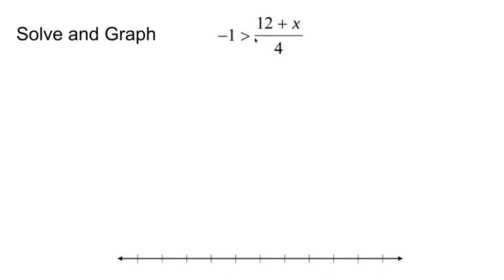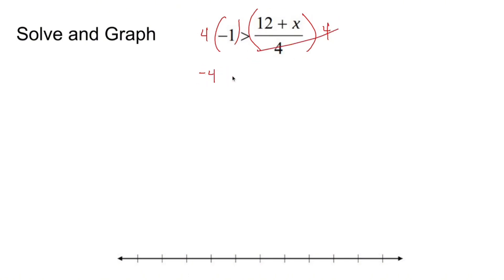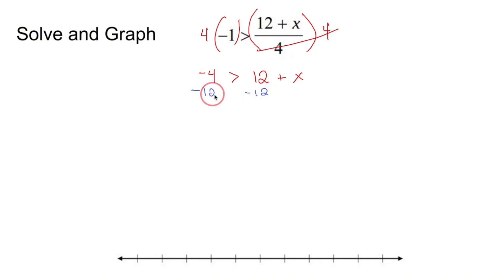This one's not going to be pleasant, but we'll do it anyway. Let's multiply both sides by 4 — whenever you divide an entire side by a number, get rid of that number by multiplying both sides by 4. Four times negative 1 is negative 4. Negative 4 is greater than — now that the fours are gone — 12 plus x. Solving an inequality is the same as solving an equation with two extra rules. X is not all by itself — 12 is floating around. How do you get rid of a positive 12? Subtract 12. That gets us: negative 4 minus 12 is negative 16, which is greater than x.